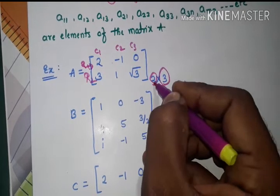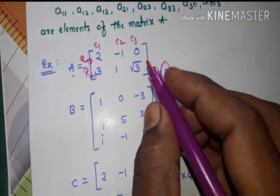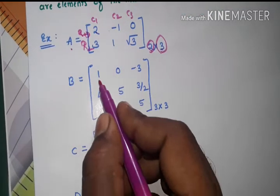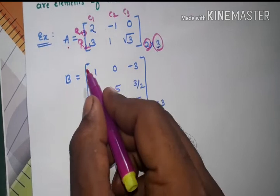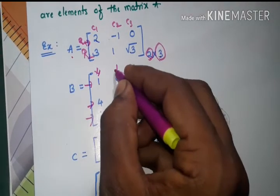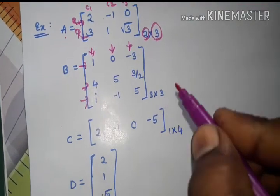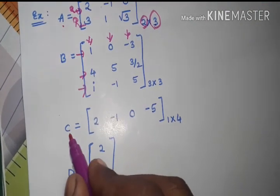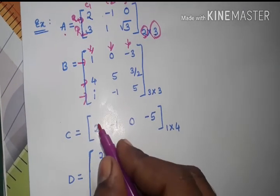Similarly, the order of the given matrix B: the number of rows are three, number of columns are also three. Hence the order is three by three.